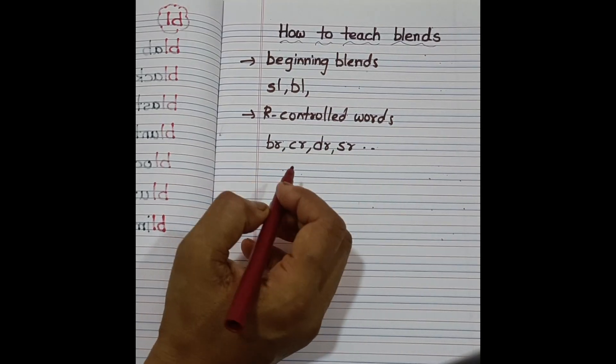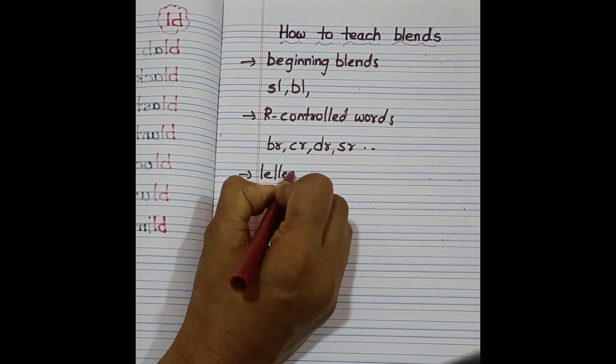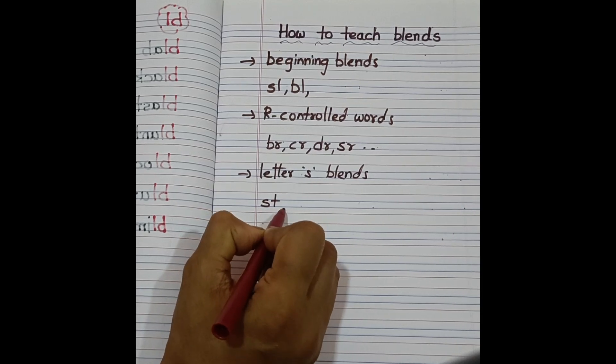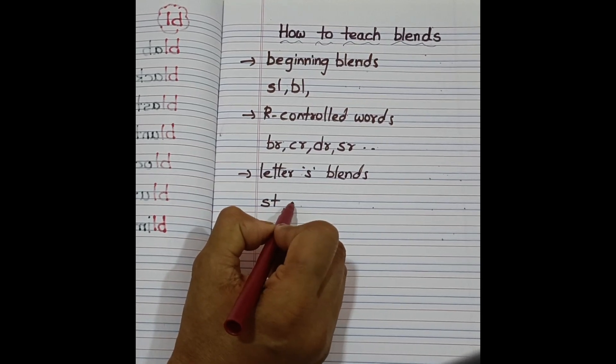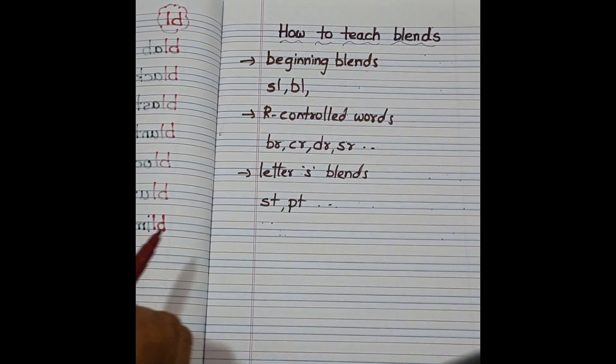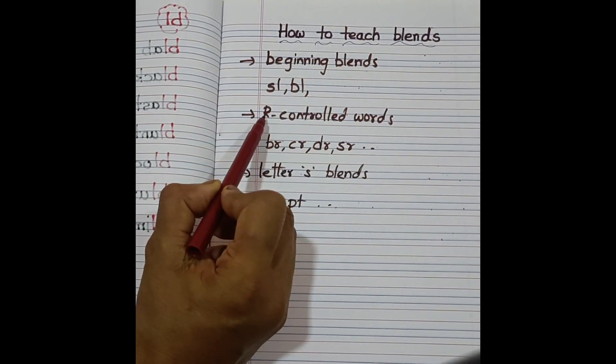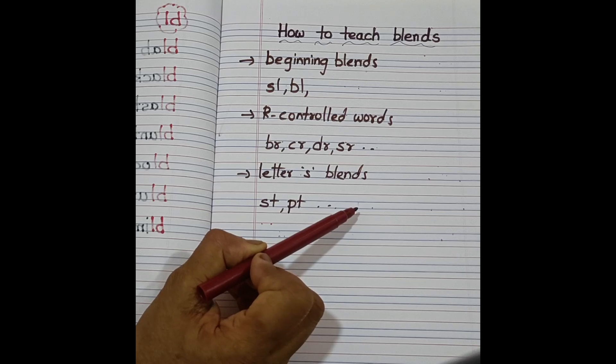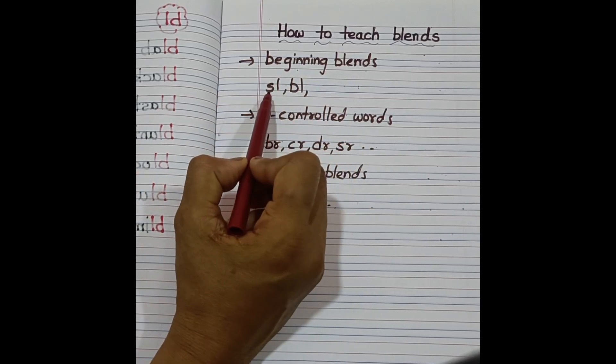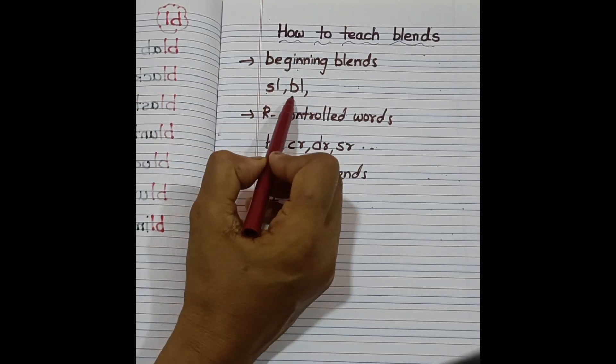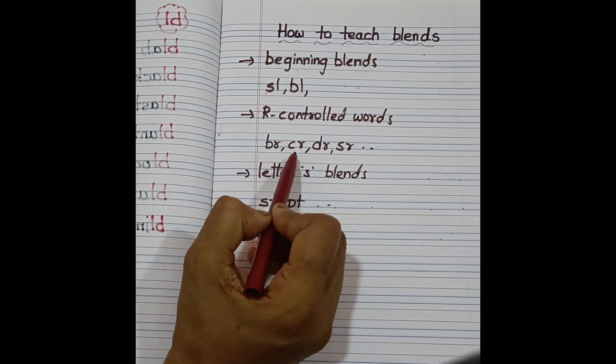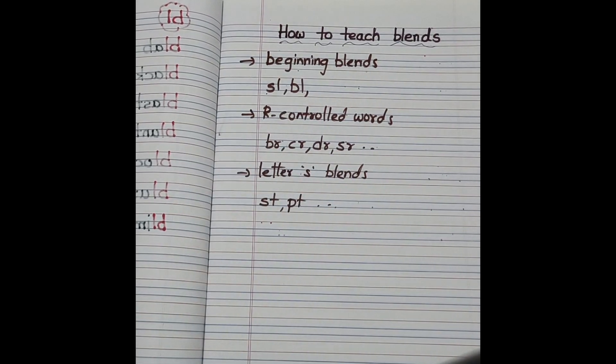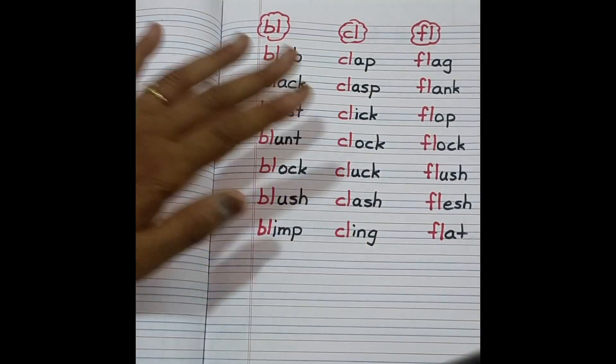Then later s-blends, like st, pt, and so on. So with respect to all these beginning blends, r-controlled words, later s-blends, already I have made video and I will provide those links in the description box. Please do watch. So beginning blends means sl, the sound of this is slur. Blur, and r-controlled br, cr, dr, sr, like this. We will look into these sounds first.